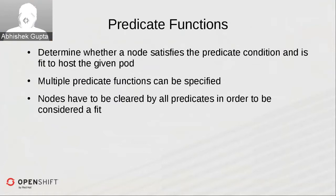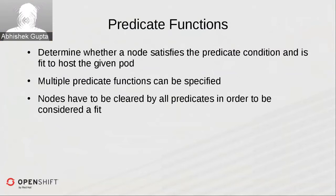The predicate functions are the filter mechanisms for filtering out nodes that do not fit the pod requirements. You can specify multiple of these. Each predicate function deals with a specific constraint, requirement, or condition specified as part of the scheduler configuration. Each node must pass through all predicate functions in order to be considered a fit for scheduling a given pod.